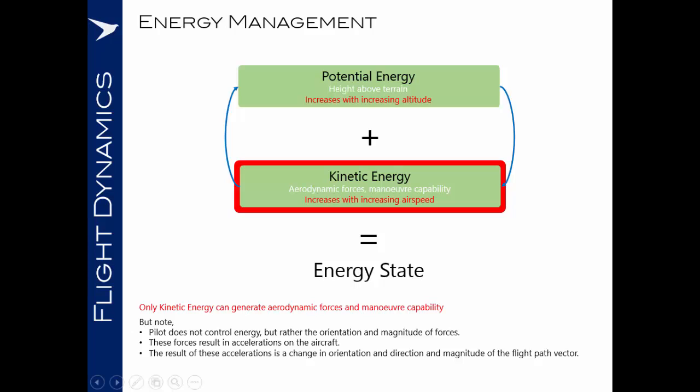Taking this down into the most simple terms, ultimately airspeed and altitude dictate the energy state of our aircraft. And it is that energy state, the combination of altitude and airspeed, which dictates our ability to maneuver.